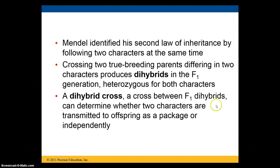Mendel identified a second law of inheritance by following two characters at the same time, which would be a dihybrid cross. He took two true-breeding parents that differed in two characters, and they produced dihybrids in the F1 generation — heterozygous for both characters. He then did a dihybrid cross using a Punnett square to determine whether two characters are transmitted to offspring together as a package, or whether they are transmitted independently of each other.